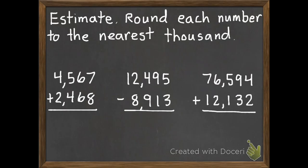You're going to round each of them to the thousands, and make sure you double-check to see if you're adding or subtracting. Go ahead and pause it and then unpause it to check your work.